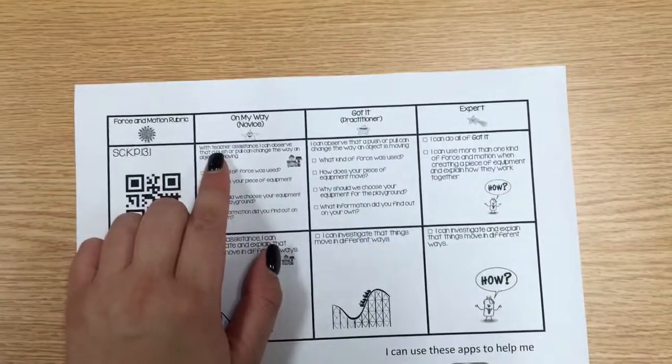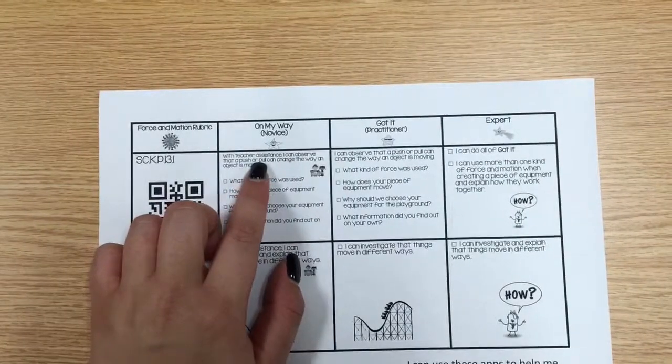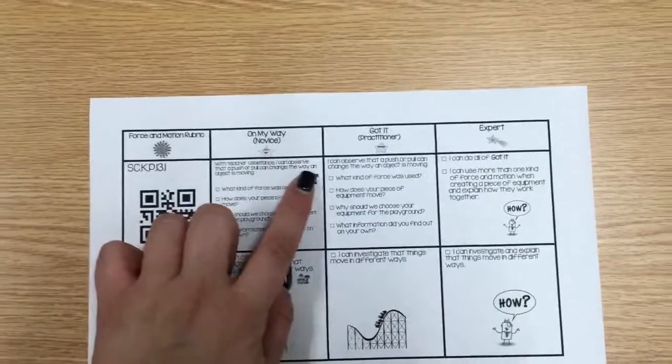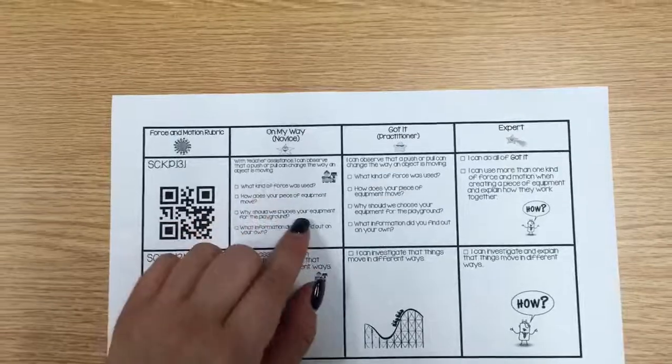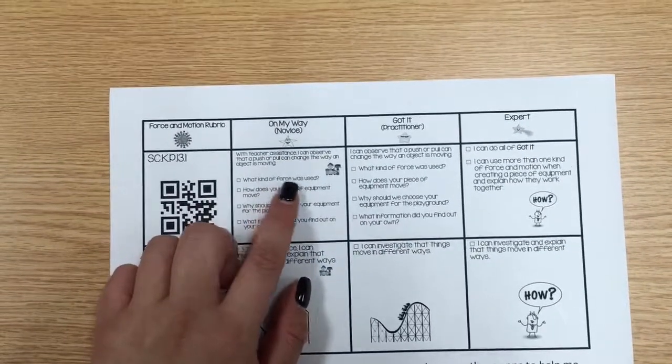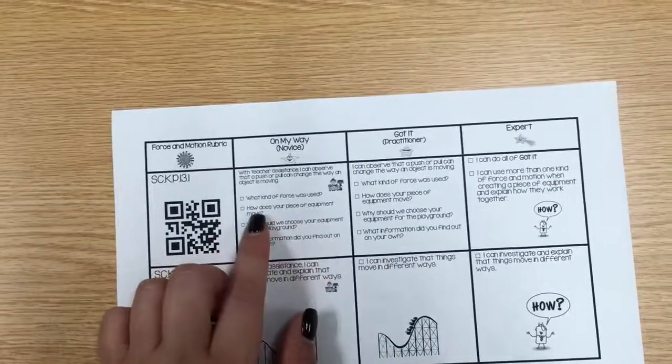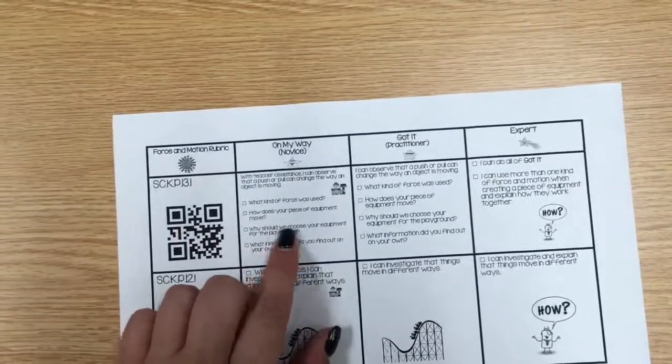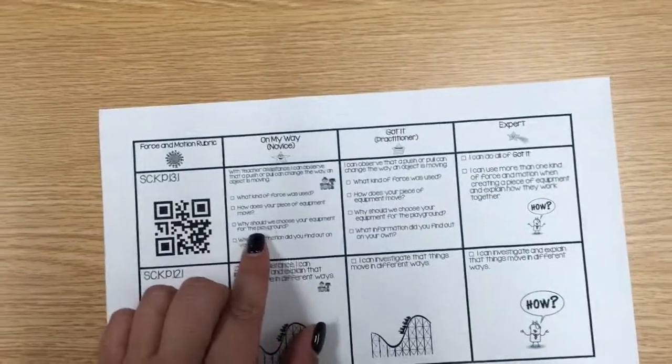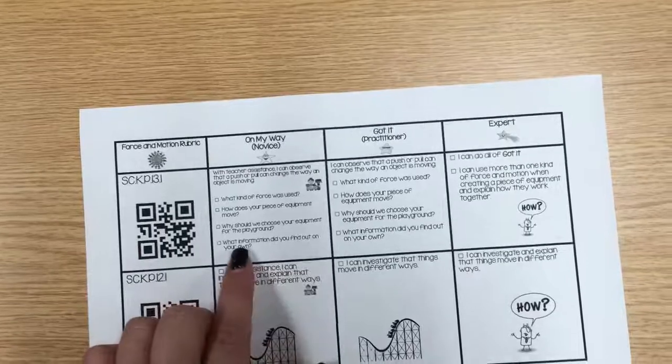In order to be on my way with teacher assistance, I can observe that a push or pull can change the way an object is moving. I need to tell what kind of force was used, how does your piece of equipment move, why should we choose your equipment for the playground, and what information did you find out on your own.